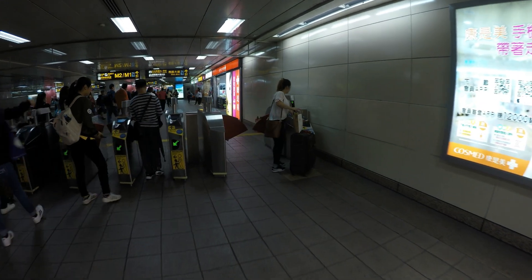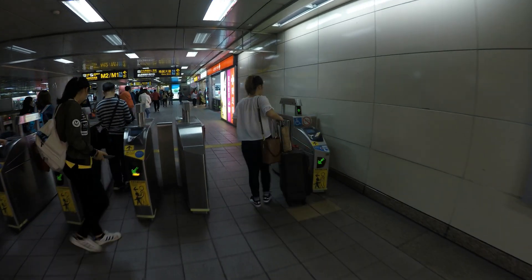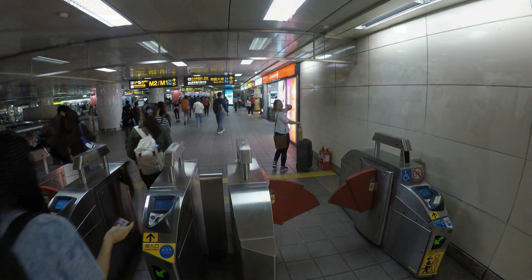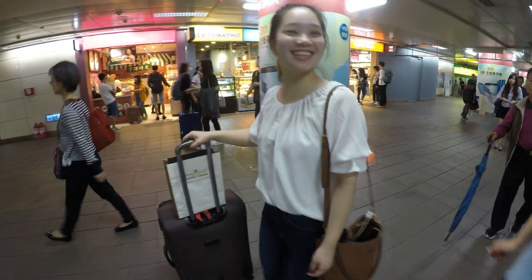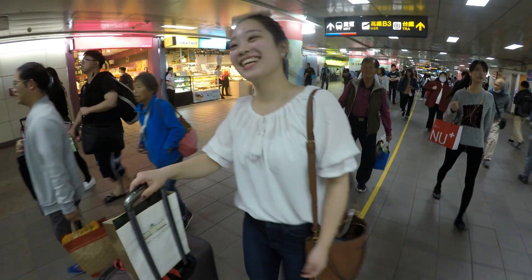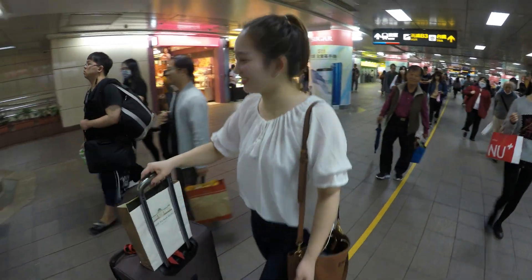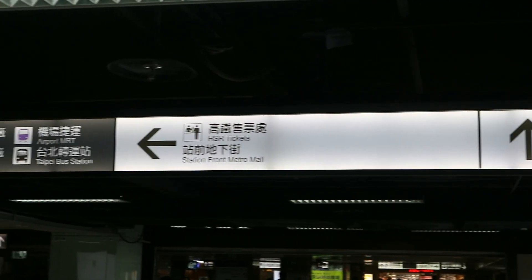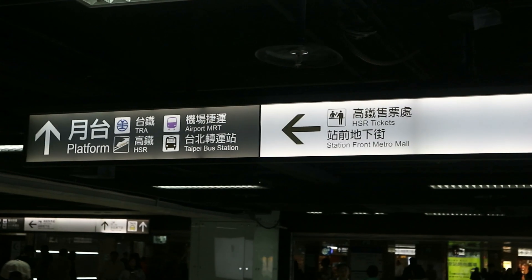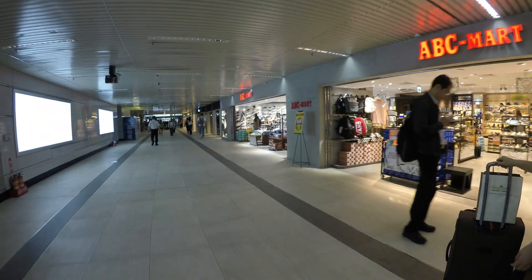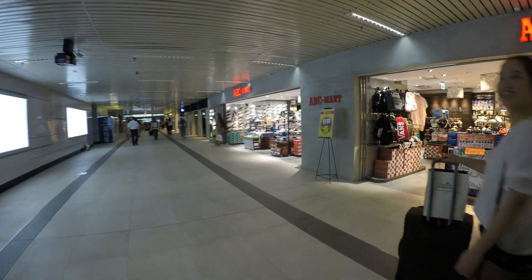The airport MRT platform is quite far from the regular MRT platform. After taking the transportation card, look for the sign that indicates a direction to Taipei City Mall. You need to go past this underground mall.